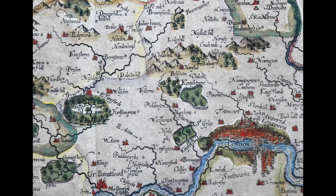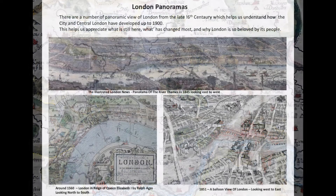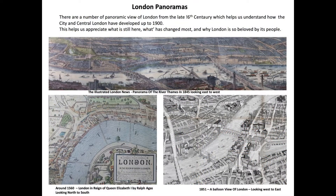We're quite fortunate that when they started to make maps of London in the old days, they tended to make them more 3D, so we have some good examples of what London might have looked like in 1560 and Victorian times. Let's look at the runs overlaid on different eras of London.